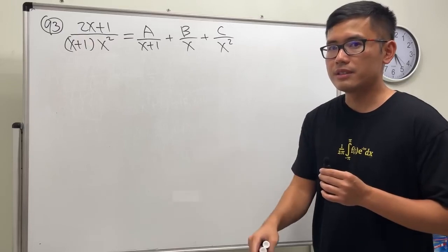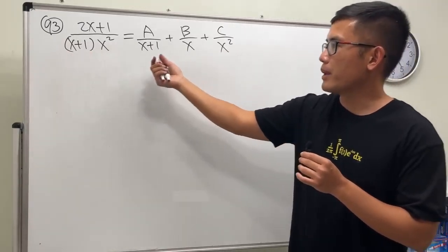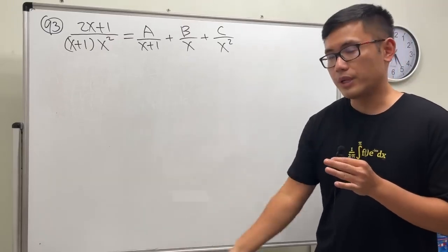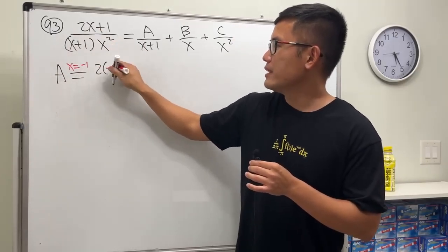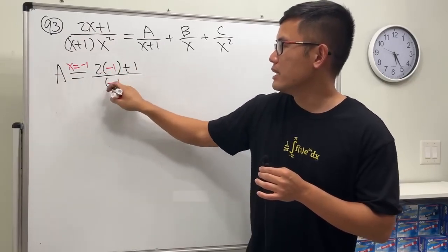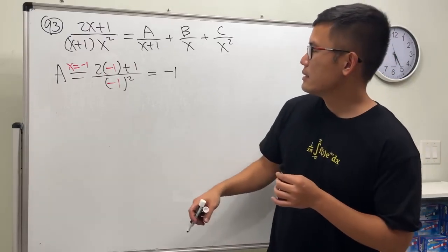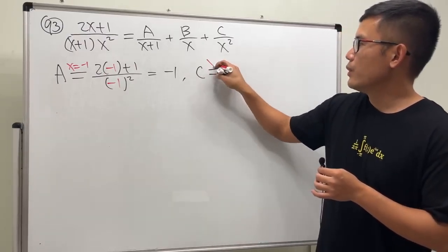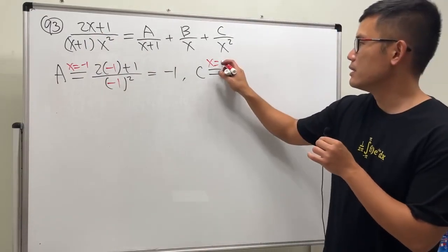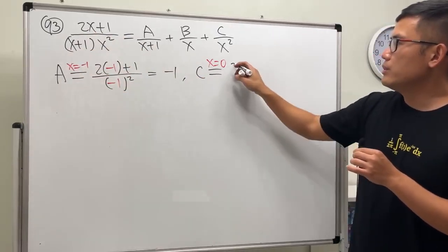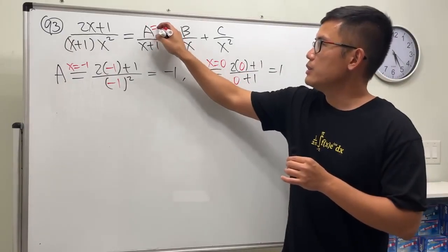We can use cover-up for two letters: a and c. For a, x will be equal to negative 1 — put it here and here. We get 2 times negative 1 plus 1 over negative 1 squared, which is negative 2 plus 1, which is negative 1, over 1. So a is just negative 1. For c, this denominator has x squared, so to make x squared equal to zero, x has to be zero. We plug zero in here and here: 2 times 0 plus 1 over 0 plus 1, that's just equal to 1. So c equals 1.